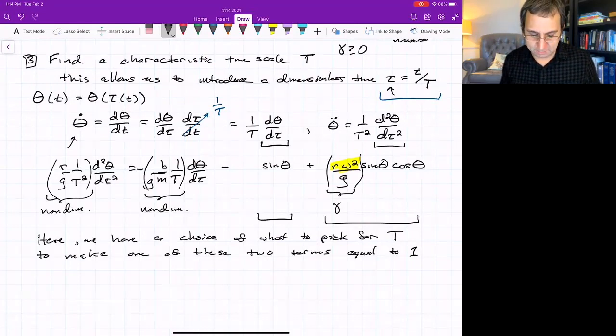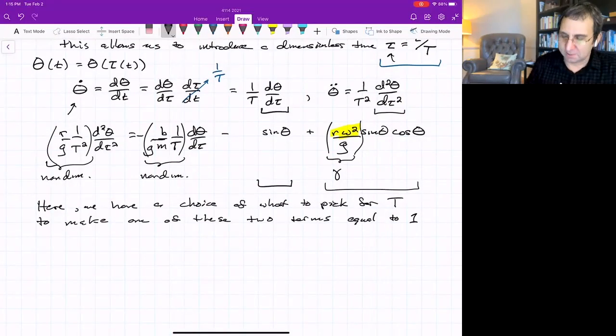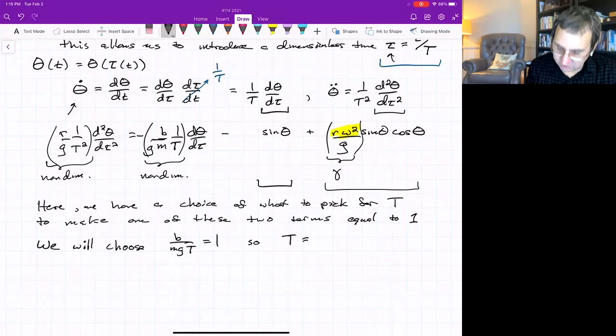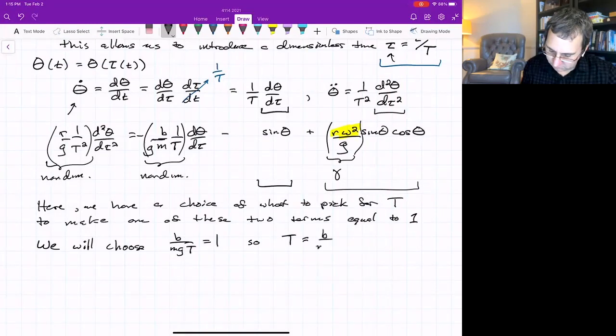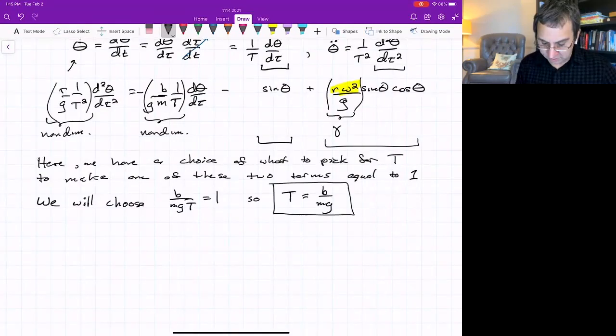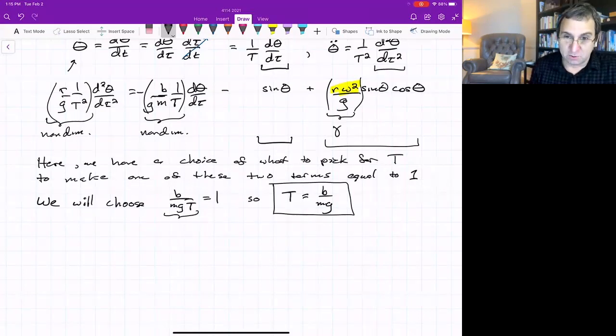It'll be some other non-dimensional number that's not necessarily 1. What we're going to do is pick a timescale that's related to the damping parameter, the friction b, just because we have to pick something. And actually looking ahead, I know that that makes the problem interesting. We will choose b over mg T equal to 1, so that the characteristic timescale is b over mg. That sets what the non-dimensional time will be. What did we pick? We picked this to be non-dimensional by a choice of T. So that's in some sense, number three. That was the third thing.